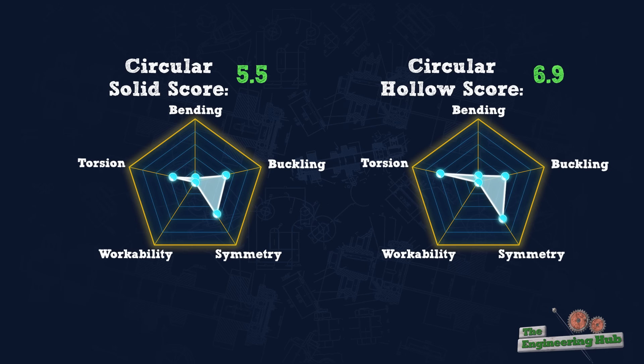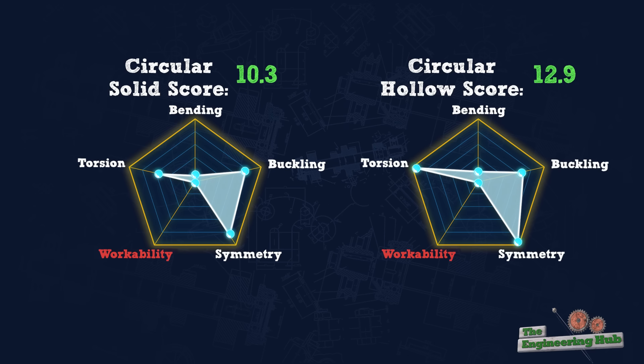Circular sections score worse than workability because they have no flat faces for attachment, but they score high in torsion and buckling resistance because of their lack of corners and continuous area far from the center. Symmetry is also maximized since these sections are symmetric about any axes through their centers.